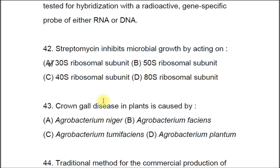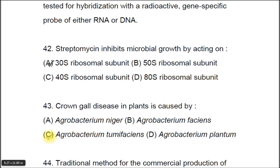Question 43: Crown gall disease in plants is caused by A) Agrobacterium nigel, B) Agrobacterium faciens, C) Agrobacterium tumefaciens, D) Agrobacterium planetum. The correct answer is C, Agrobacterium tumefaciens.